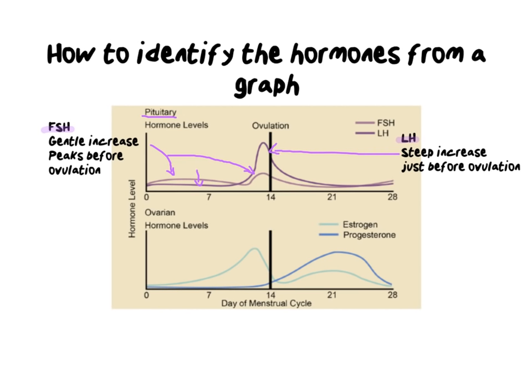Now let's look at the ovarian hormone levels. These are the hormones secreted by the ovary, and the only reason they are being secreted is because of what's happening with FSH and LH above. They work with each other: whatever happens with follicle-stimulating hormone and luteinizing hormone will have an impact on estrogen and progesterone.